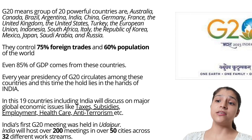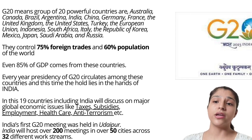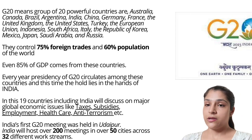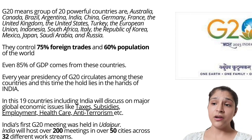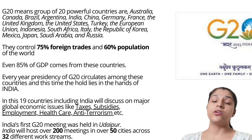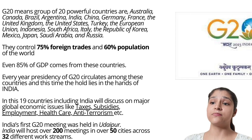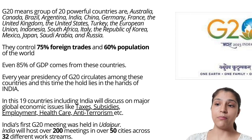Every year, the presidency of G20 circulates among countries. This is the handover of India, that's why we have a G20 invitation. Because India has its presidency, 19 countries excluding India will discuss major global economic issues like taxes, subsidies, employment, healthcare, anti-terrorism, etc. These are all global economic issues which are discussed in the G20 meeting.